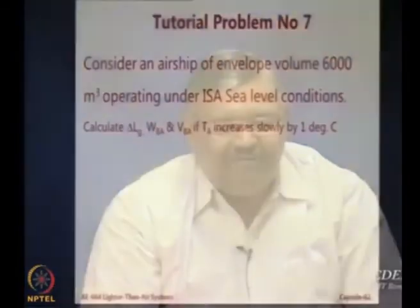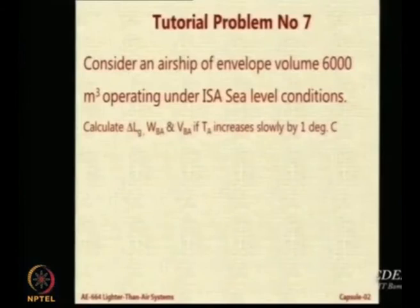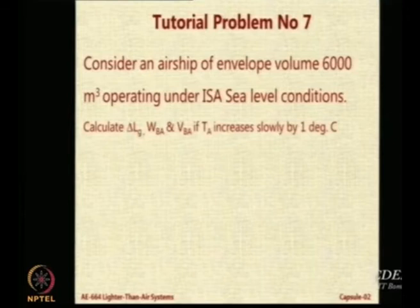So, if you have understood this, let us see if you can solve this problem. Now we have an airship, the same airship, same ISA conditions, and we want to calculate the lifting gas weight, the ballonet air weight, and the volume of ballonet air if there is a 1 degree change in the temperature and it is slow.